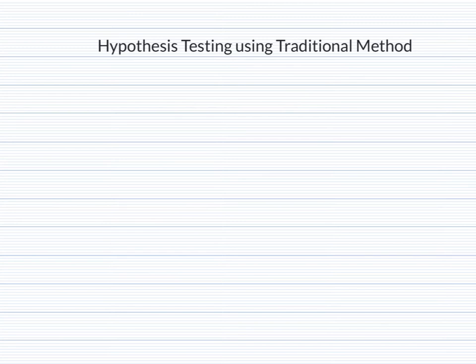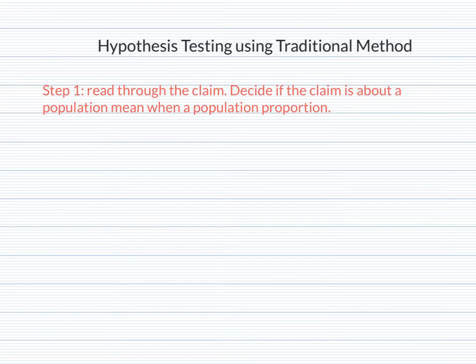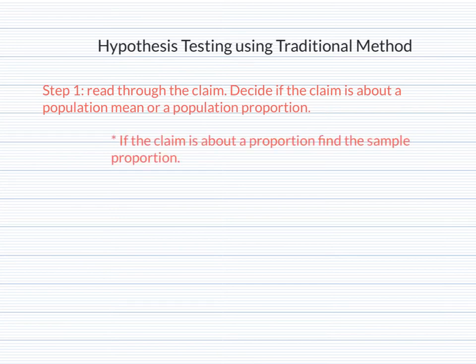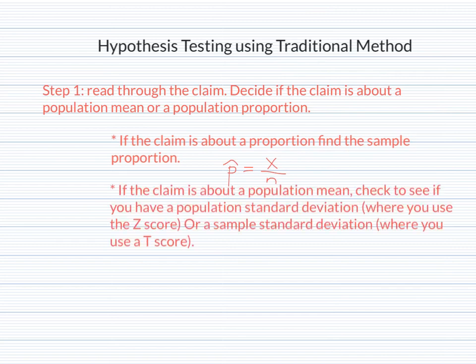Let's go over the steps to actually doing the hypothesis test using the traditional method, and then we'll do a couple of examples. Step one is to read through the claim and decide if the claim is about the population mean or a population proportion. If the claim is about a population proportion, we find the sample proportion: p-hat equals x over n, where n is your total sample size and x is how many are in the proportion. If the claim is about a population mean, we check whether we have a population standard deviation, in which case we use a z-score, or a sample standard deviation, in which case we use a t-score.